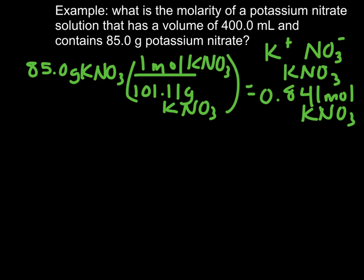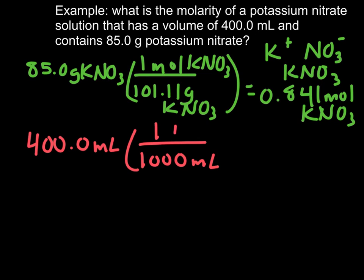Now our second step is to convert the milliliters of the solution to liters, because in order to be in molarity, you have to be in moles per liter. This particular problem, we were given milliliters, so we have to do a quick conversion. We have 400.0 milliliters of solution, and we know that there are 1,000 milliliters to 1 liter, so we have 0.4000 liters of solution.